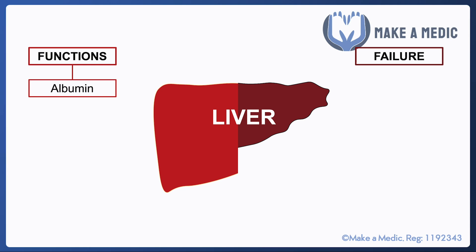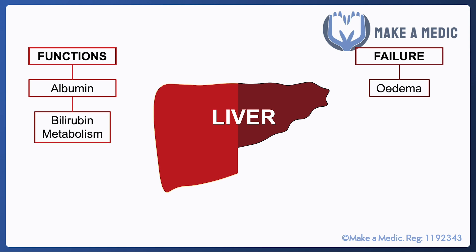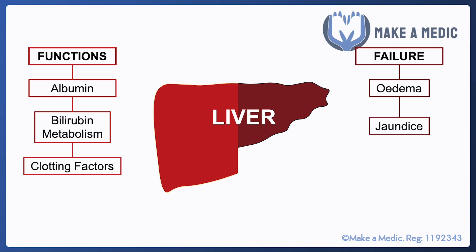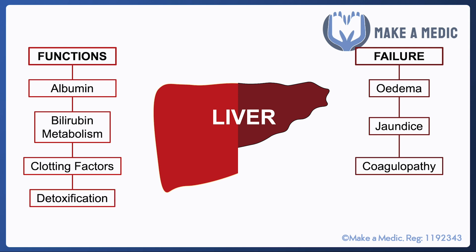If we don't produce enough albumin we are unable to keep fluid within the intravascular compartment and hence we develop edema. The liver is also responsible for bilirubin metabolism and a defect in bilirubin metabolism will lead to jaundice. If the liver is unable to make clotting factors it can lead to coagulopathy and excessive bleeding, and finally the liver detoxifies various toxins absorbed within our GI tract. If it's unable to do that, nitrogenous toxins will get through to the systemic circulation and can cause encephalopathy.